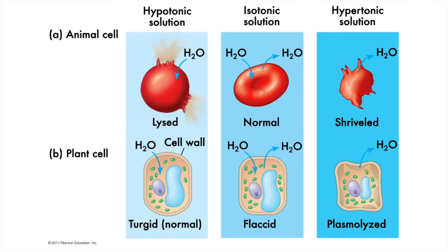Here's what that looks like. Up top we see an animal cell — a red blood cell — in hypotonic, isotonic, and hypertonic solutions. A hypotonic solution has high water concentration and water will move to where water concentration is low, into the cell. If too much water enters the cell, it will burst or lyse. In an isotonic solution, the rate of water entering and leaving the cell is about equal and the cell will remain normal. In a hypertonic solution, water concentration is low, water in the cell will leave, rendering a shriveled cell.